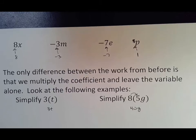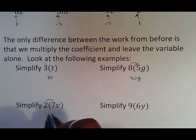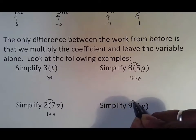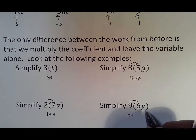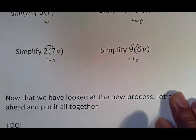When we have 2 times 7v, we multiply 2 times 7 to get 14, then bring the v down with it. For 9 times 6y, we multiply 9 and 6 to get 54, and bring the y down because it's still part of that connection in multiplication. That is the new part. Now that we've looked at the new process, let's put it all together.